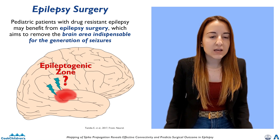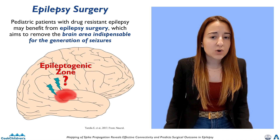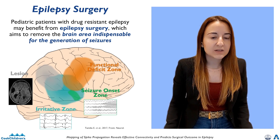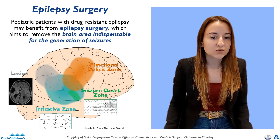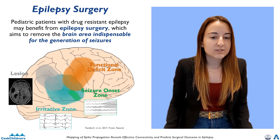The surgery aims to remove the epileptogenic zone, which is the brain area where seizures originate. However, since it's not possible to estimate the epileptogenic zone directly, the most reliable indicator is the seizure onset zone, which includes the electrodes where most seizures occur. To be defined, it requires recording of several stereotyped seizures.